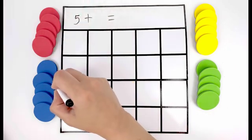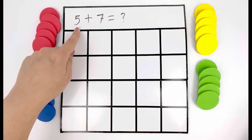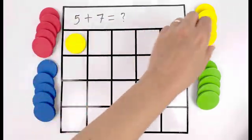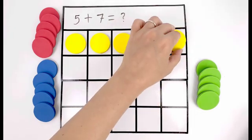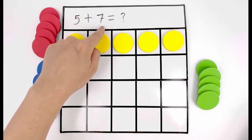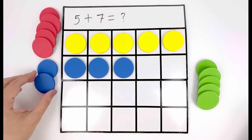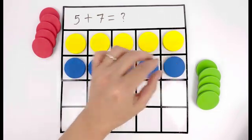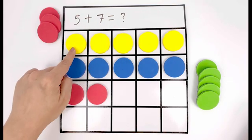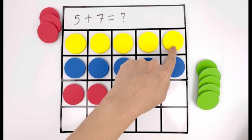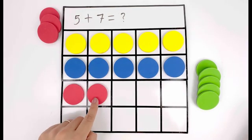Five plus seven. What is five plus seven? Let's find out. Five, I need five circles, one, two, three, four, five. Five plus seven, now I need seven circles, one, two, three, four, five, six, seven. Five plus seven equals one, two, three, four, five, six, seven, eight, nine, ten, eleven, twelve. It equals twelve.